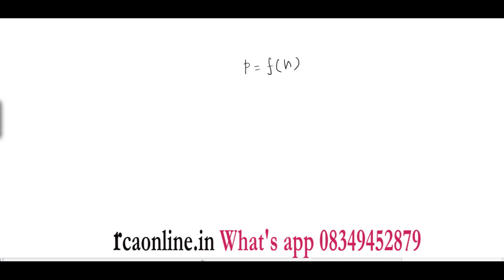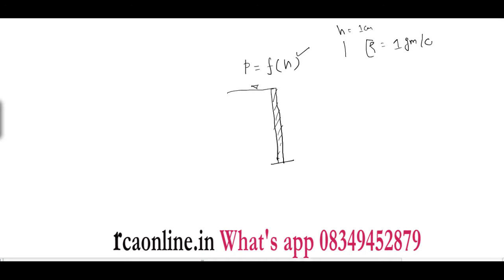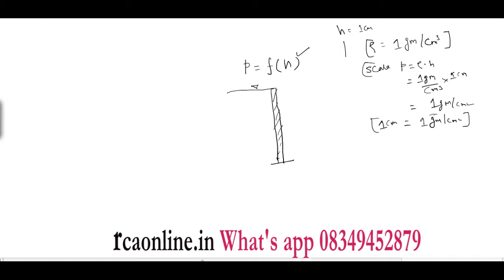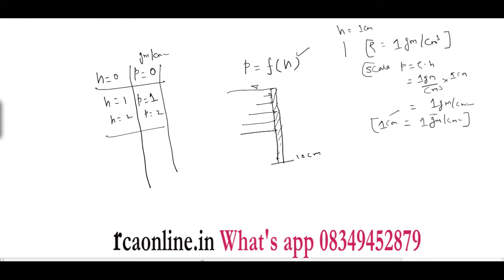First of all we should know about the pressure distribution diagram. Let's say there is a retaining wall and we have to see the pressure distribution diagram for this retaining wall. By the nature of pressure distribution, as we know pressure is a function of H. Say H is changing by 1 centimeter and the density (rho) of water is 1 gram per centimeter cube. If P = rho × H, then at 1 cm height, pressure will be 1 gram per centimeter square. So starting from 0, at H = 1, P = 1 gram per centimeter square. Let's plot the pressure distribution diagram — and here it is.